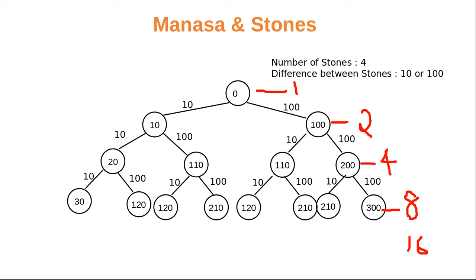Let's say we start from the first stone. Then second stone, third stone, and fourth stone. When you start with four stones, once you jump to the next stone, the remaining count decreases — three, then two, then one. Once it reaches one, there is no further step — it is the last stone.